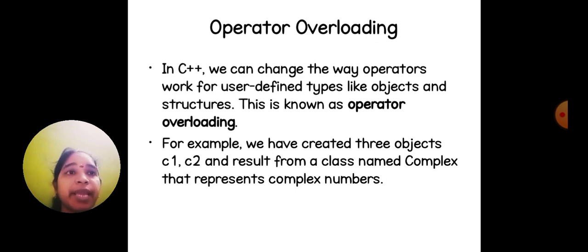In C++, we can change the way operators work for user-defined types like objects and structures. This is known as operator overloading. For example, we have created three objects c1, c2, and result from a class named Complex that represents complex numbers.